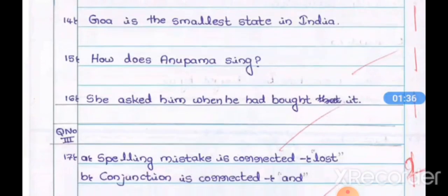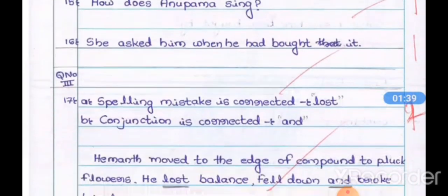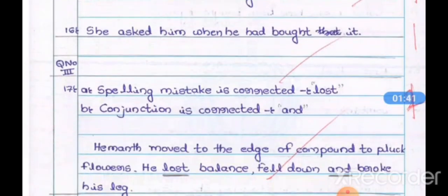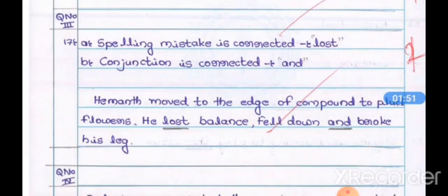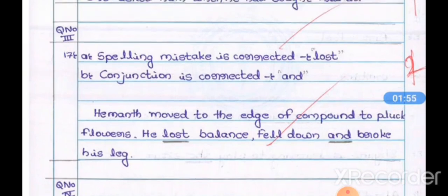Up to question 16, the second main questions are over. Then question number three is editing paragraph. First identify the mistakes, afterwards rewrite the paragraph. If you write like this, definitely you gain two out of two in the editing paragraph question.